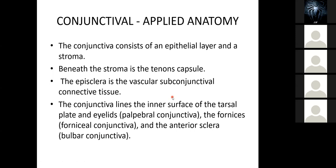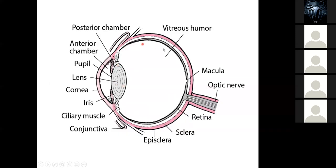Looking at a picture here — this entire diagram is our eyeball. From this corner here and this corner here, they are the extents of the external eye that we see. The conjunctiva lines the palpebral conjunctiva, this is the fornical conjunctiva, and this is the bulbar aspect. Note that the conjunctiva does not come to the cornea — this is the cornea of the eye.